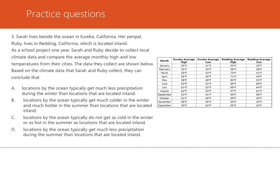Number three, Sarah lives beside the ocean in Eureka, California. Her pen pal, Ruby, lives in Redding, California, which is located inland, not right by the ocean. So as a school project one year, Sarah and Ruby decided to collect local climate data and compare the average monthly high and low temperatures from their cities. The data they collected is shown right here in the table. So based on the climate data that Sarah and Ruby collected, they can conclude that what? So we've got the months, January through December. We've got the Eureka average high temperature for each month and the Eureka average low temperature for each month and then the Redding average high temperature for each month and the Redding average low temperature for each month. So pause it, read it over, and see what you think.